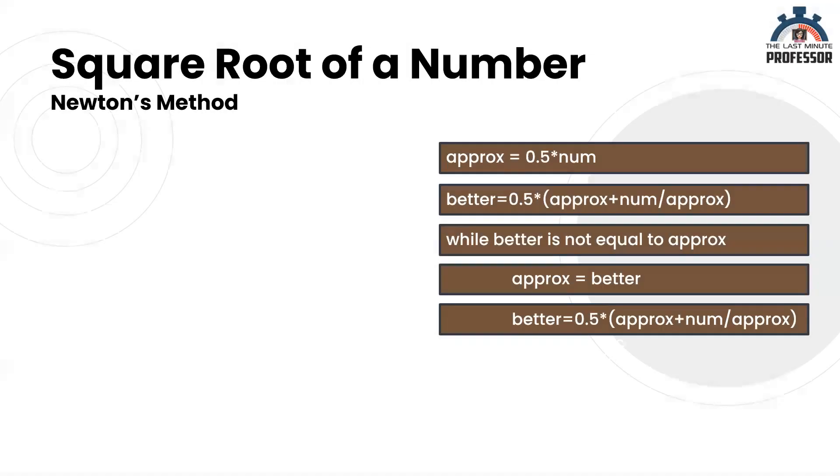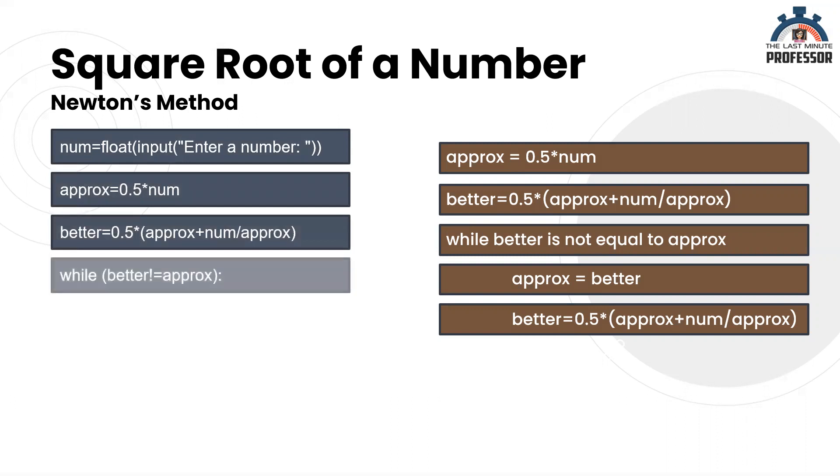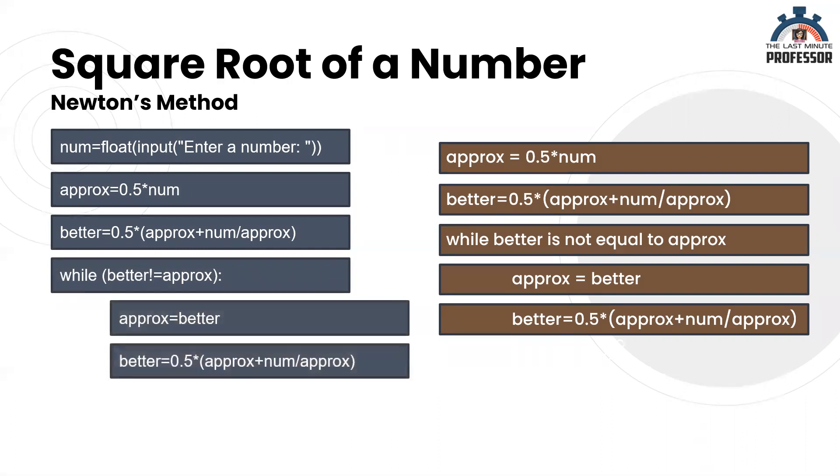Let us code this in Python. Read the input num from user as float. Initialize approx as half the value. Calculate better. While better is not equal to approx, let us indent and give the statements for approx and better. After the loop, print the better value as square root. You can even print approx because when program control comes out of the loop, both better and approx are same.